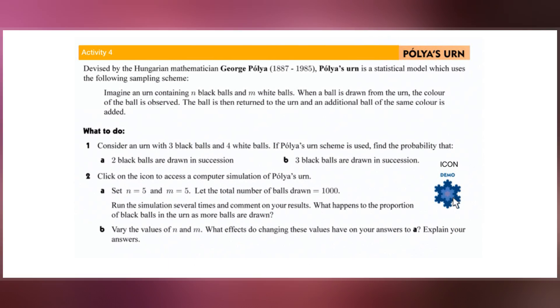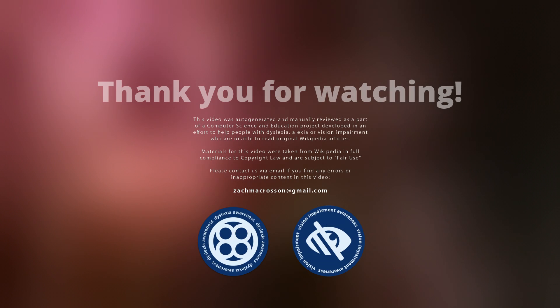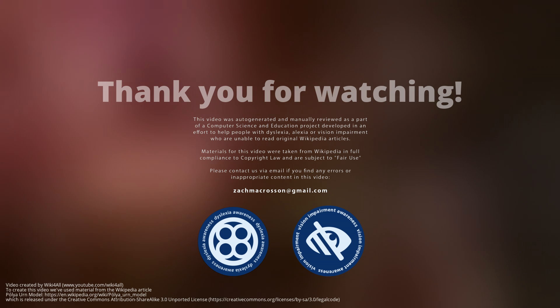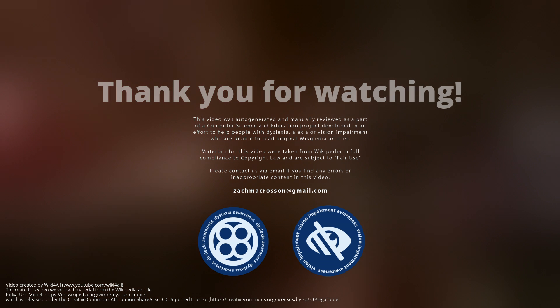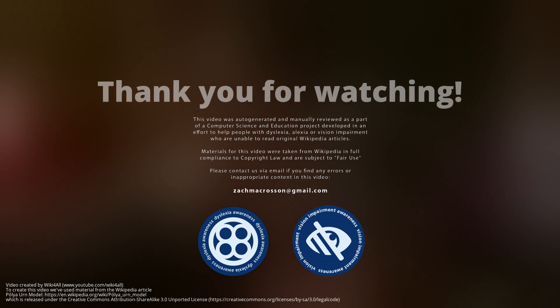This endows the urn with a self-reinforcing property sometimes expressed as the rich get richer. Note that in some sense, the Polya Urn model is the opposite of the model of sampling without replacement, where every time a particular value is observed, it is less likely to be observed again, whereas in a Polya Urn model, an observed value is more likely to be observed again.